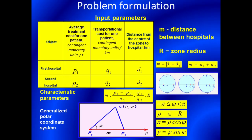The input parameters are: P1 — average treatment cost for one patient in the first hospital; P2 — average treatment cost for one patient in the second hospital; Q1 and Q2 — transportational cost for one patient to the hospital per 1 km; D1 and D2 — distance from the center of the zone to the first and the second hospital; M — distance between hospitals; R — zone radius.